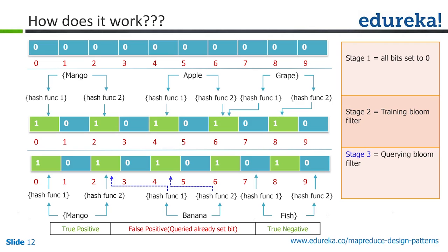That is called the false positive rate. We have to mention what the false positive rate is. You can mention whether the false positive rate is 20% or 30% — it is up to you to decide how much false positive is acceptable. The biggest advantage of the bloom filter is: if the bloom filter says the corresponding data is not there, it is definitely not there. That is the biggest advantage.